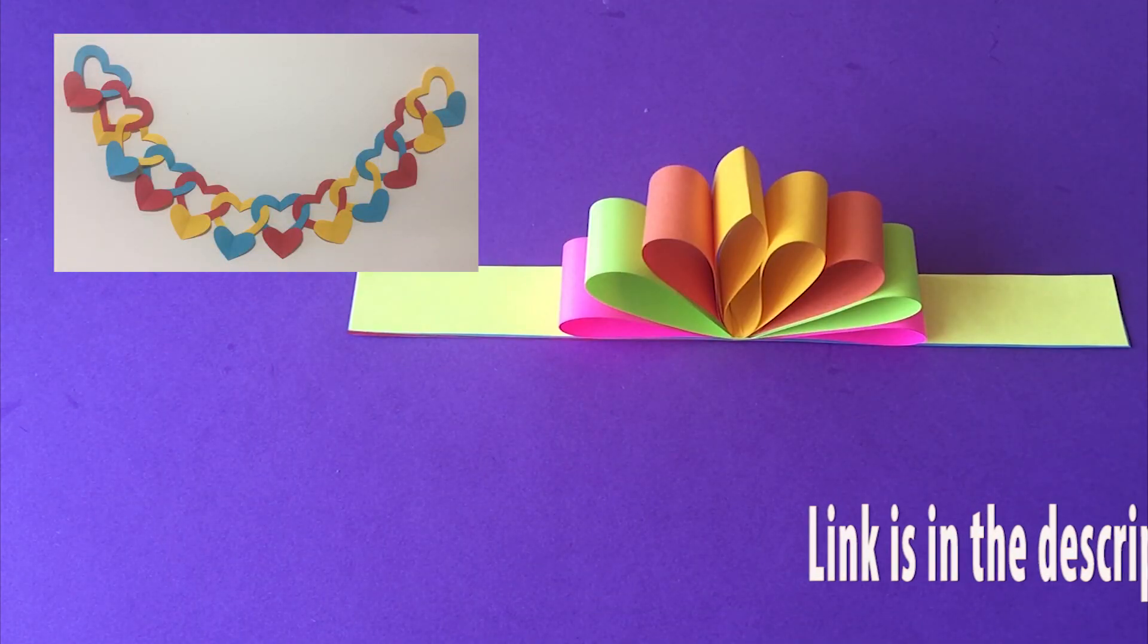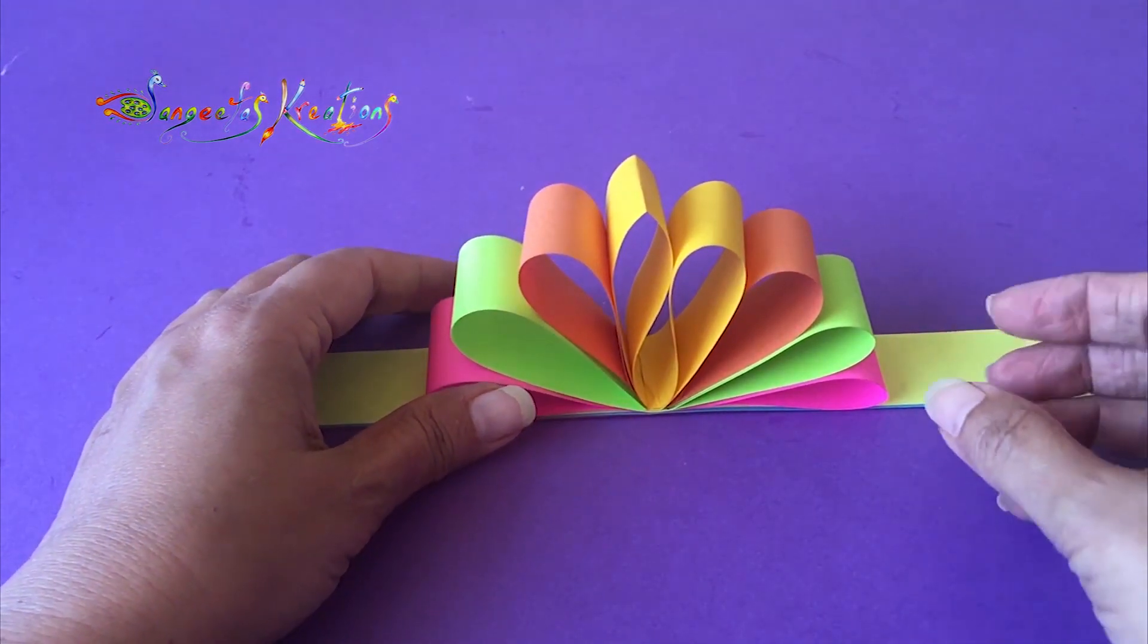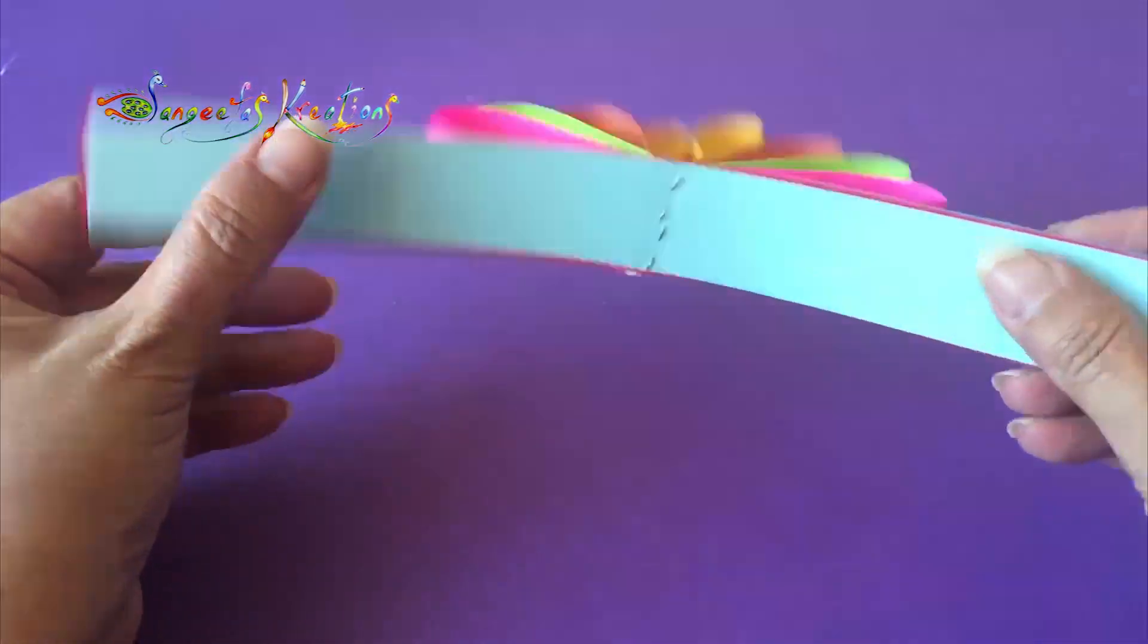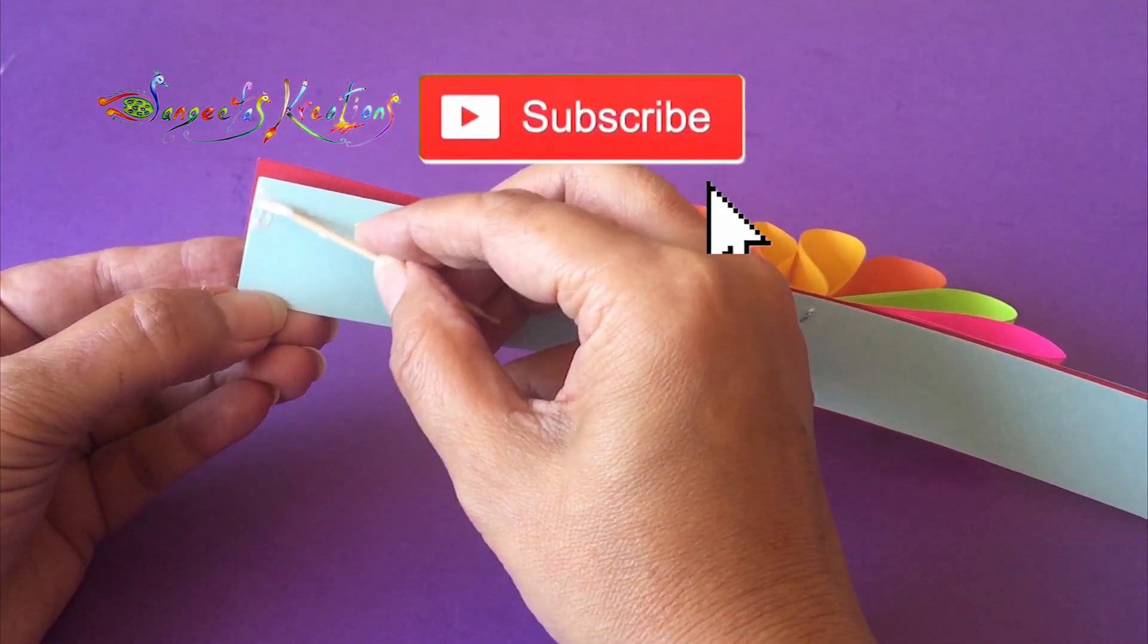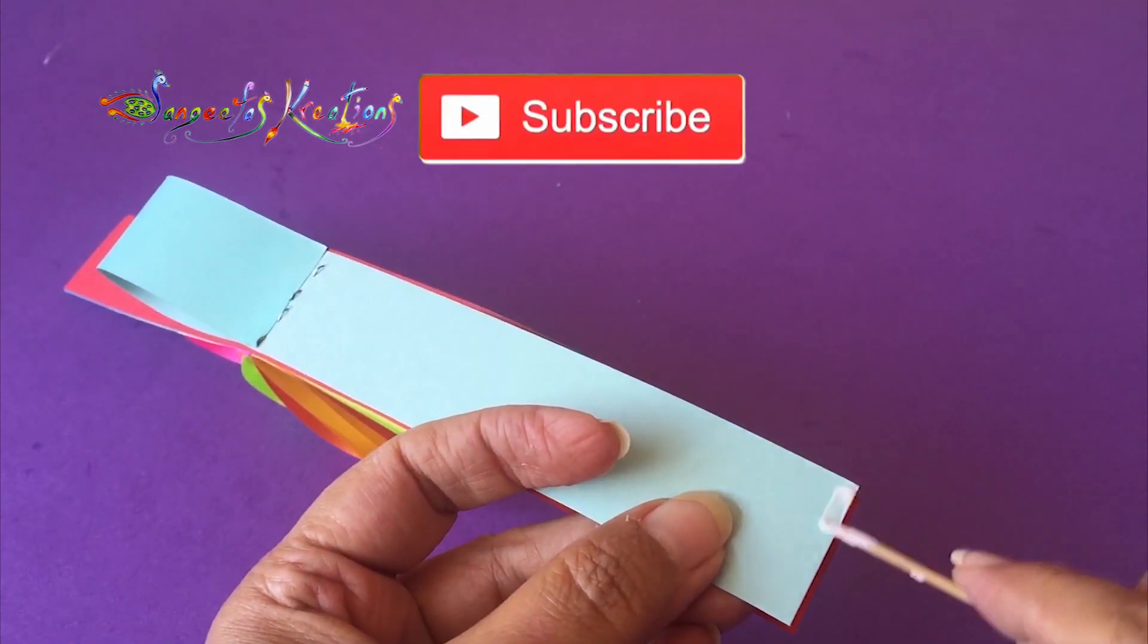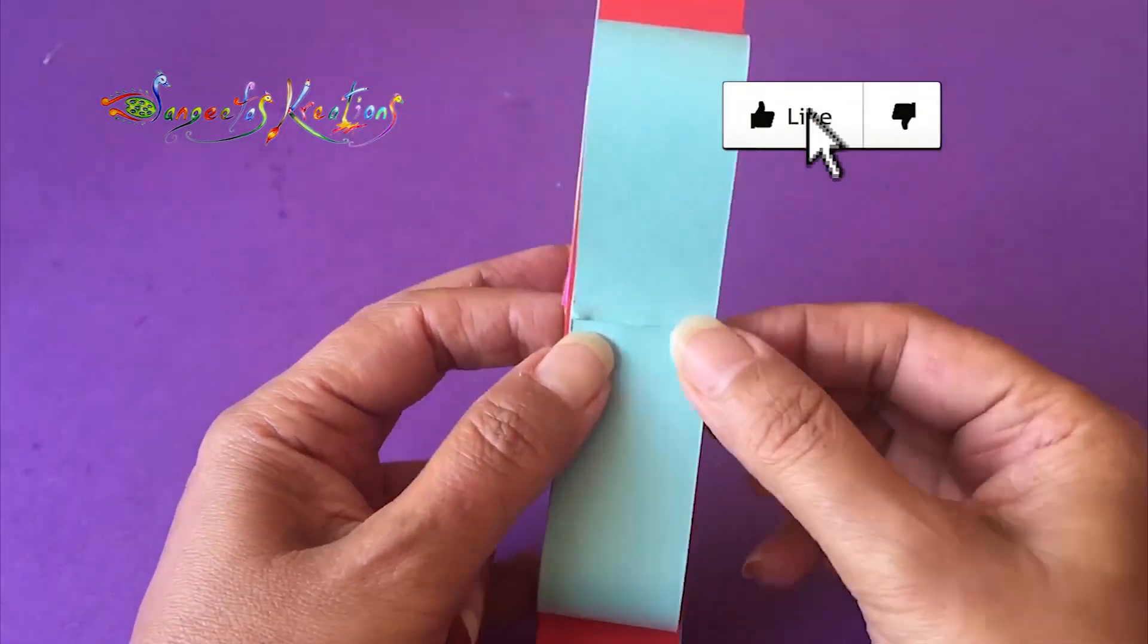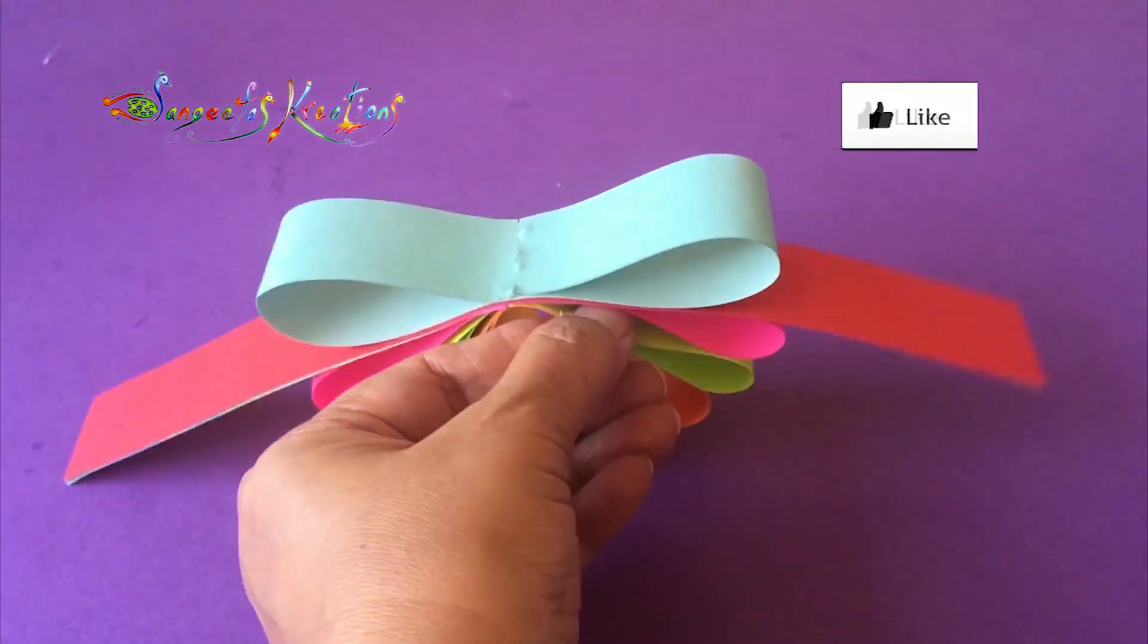Keep on repeating. Now here turn around and repeat the same way by applying glue to the edge of the strip and paste it in the middle. Keep on repeating in the same manner friends.